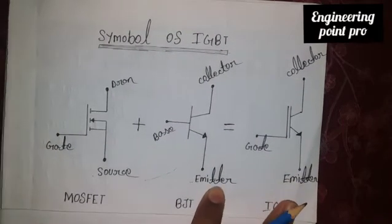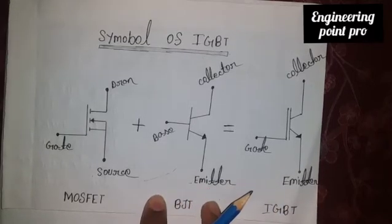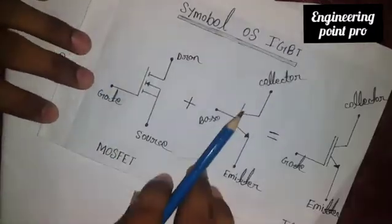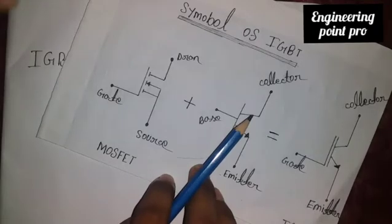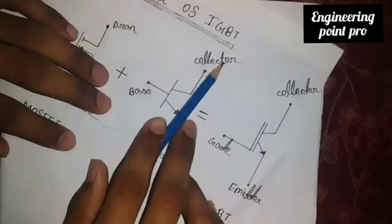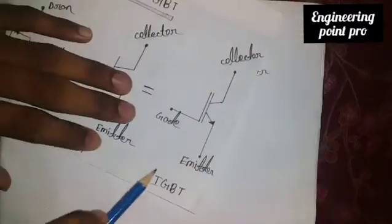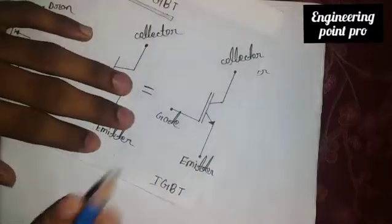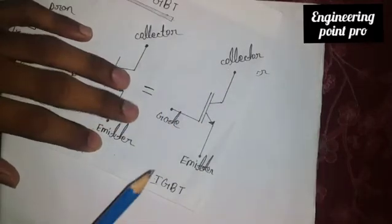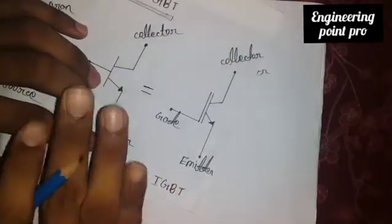IGBT is combined with MOSFET and BJT. This is power MOSFET circuit symbol. This is the gate-source terminal. This is BJT circuit symbol — these three terminals are base, collector and emitter. This is IGBT circuit symbol — these three terminals are gate, collector and emitter. IGBT means Insulated Gate Bipolar Transistor.